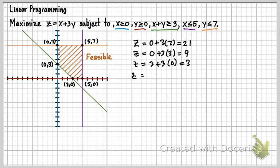And then z equals 5 plus 3 times 0, and that's going to equal 5. And then z equals 5 plus 3 times 7, so that's 21 plus 5, which is 26.